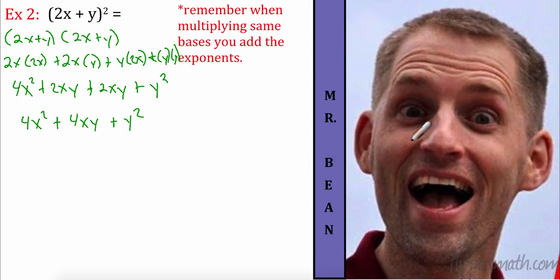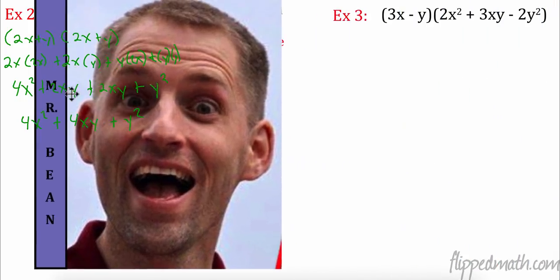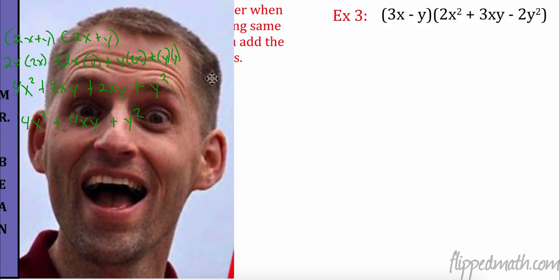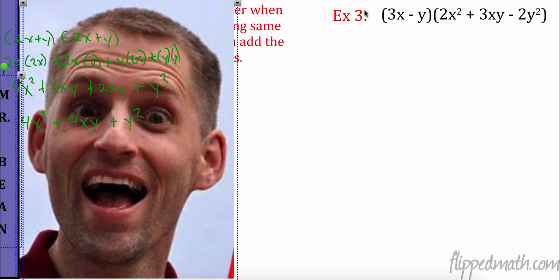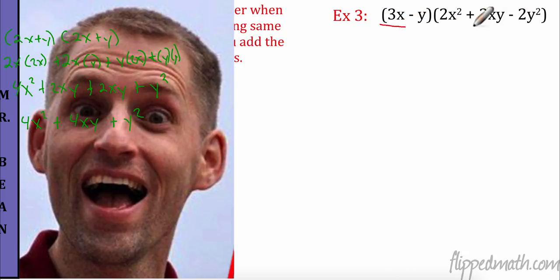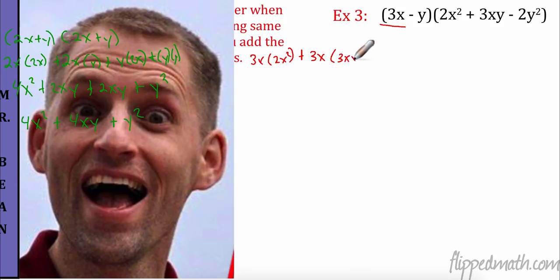Now we have a binomial times a trinomial. Nothing changes — I'm going to take (3x − y) and multiply by all three terms in (2x² + 3xy − 2y²). So: 3x times 2x squared, then 3x times 3xy, then 3x times negative 2y squared. Now I'm done with that first term.